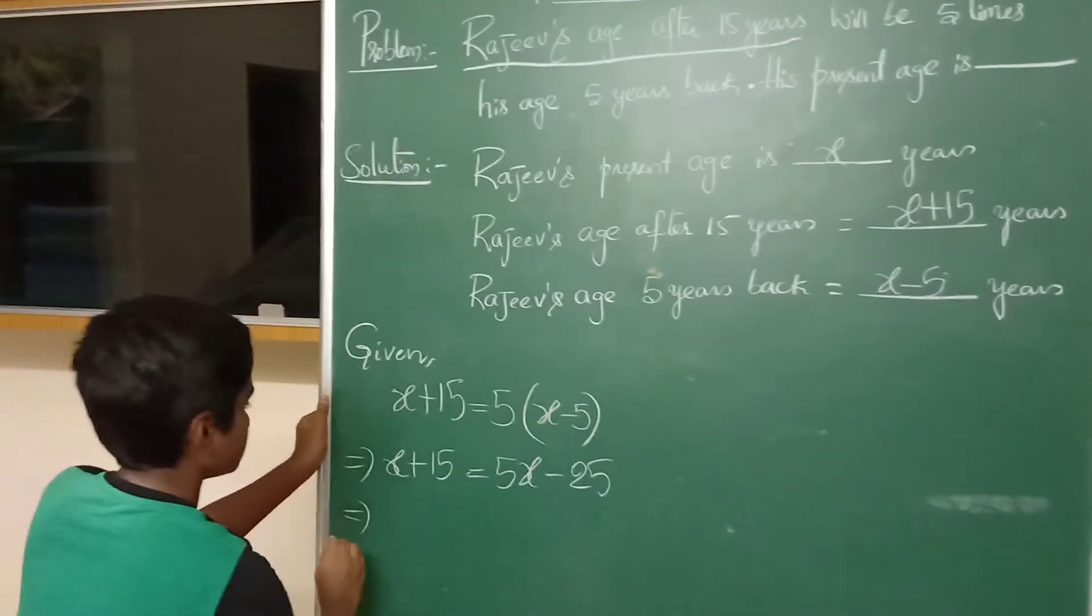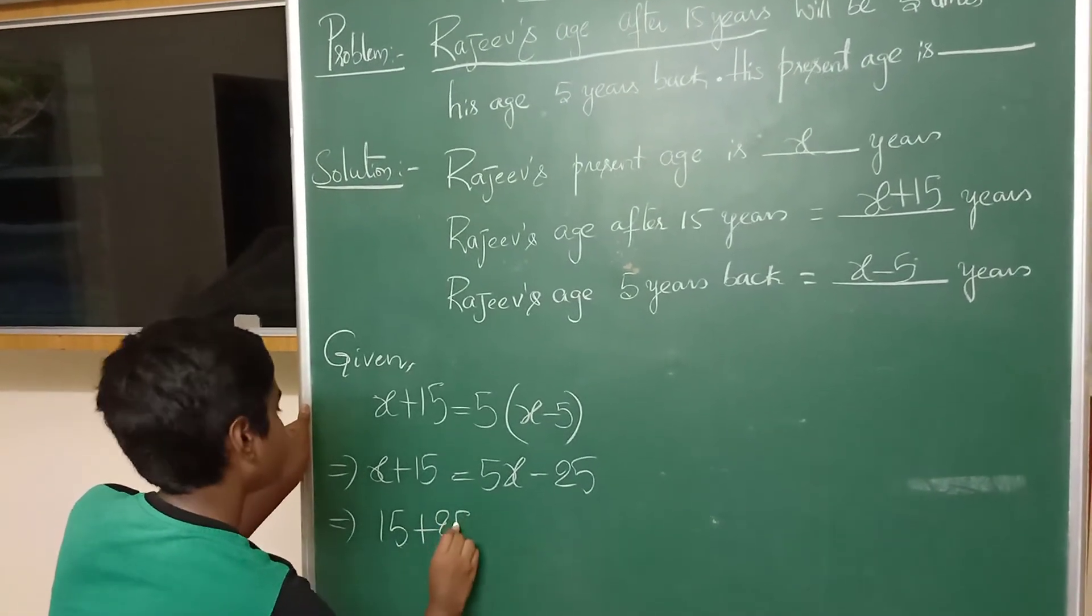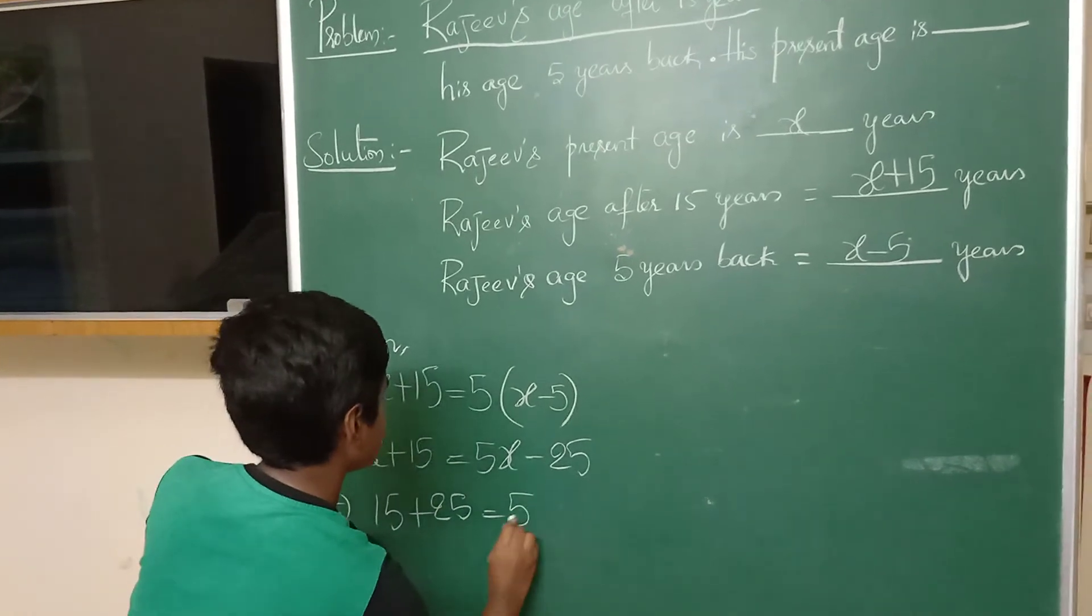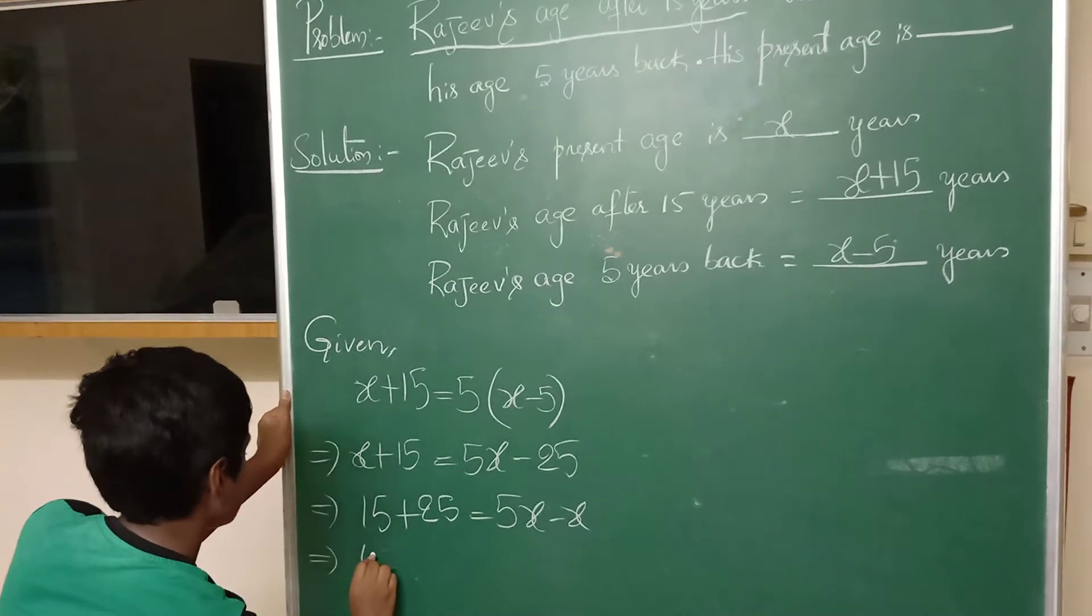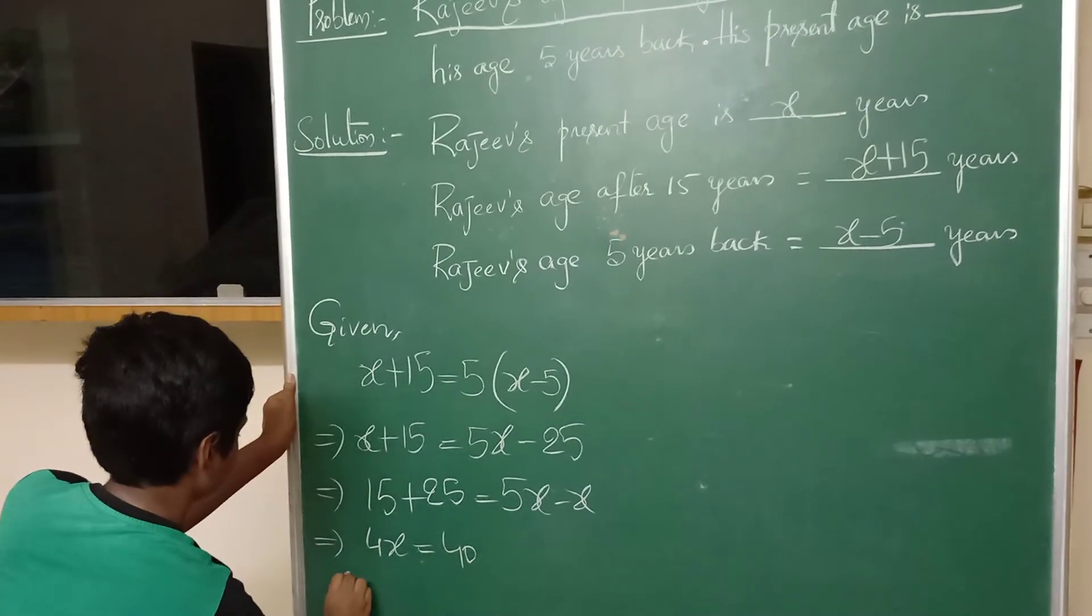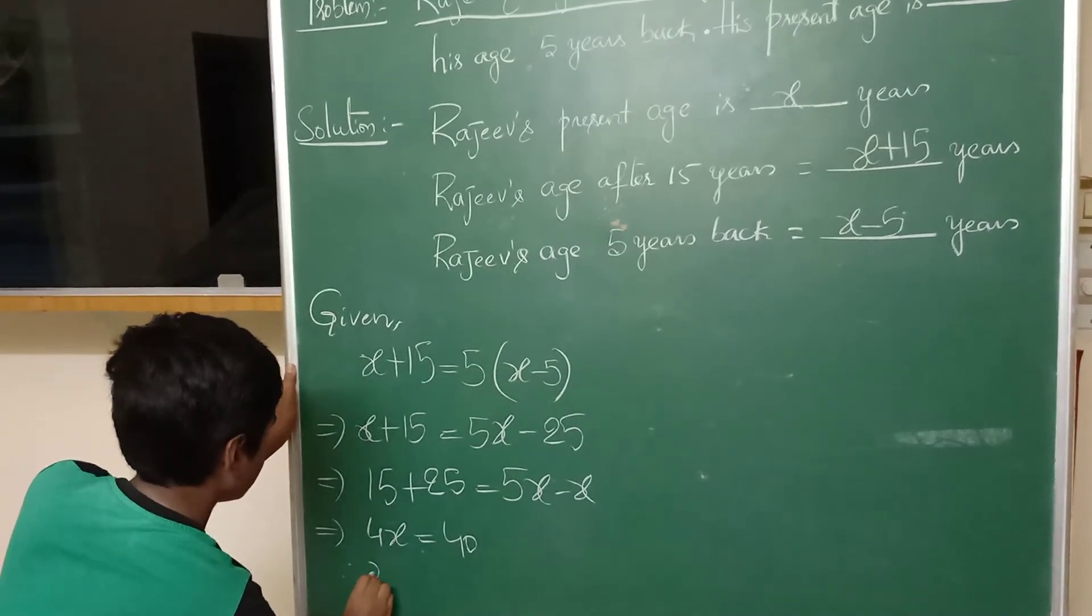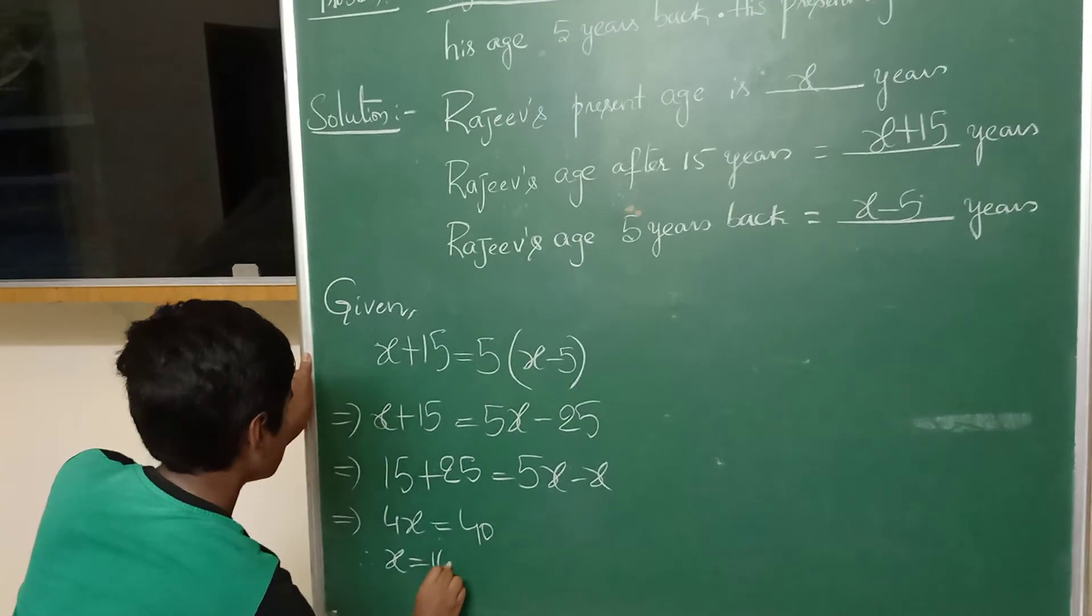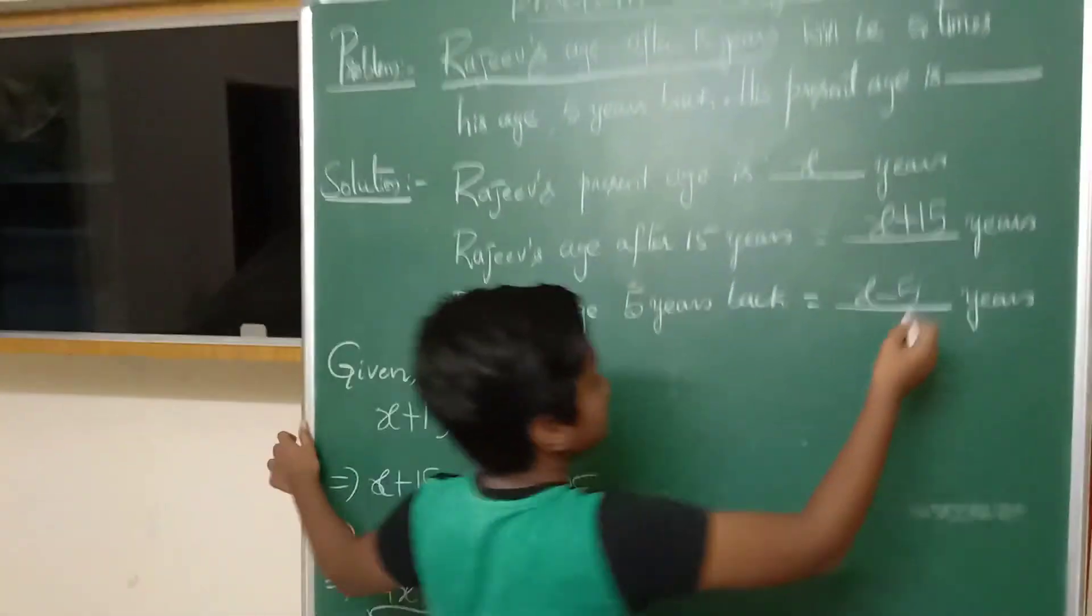15 plus 25 equals 5X minus X. Therefore, 4X equals 40, so X equals 10. His present age is 10 years.